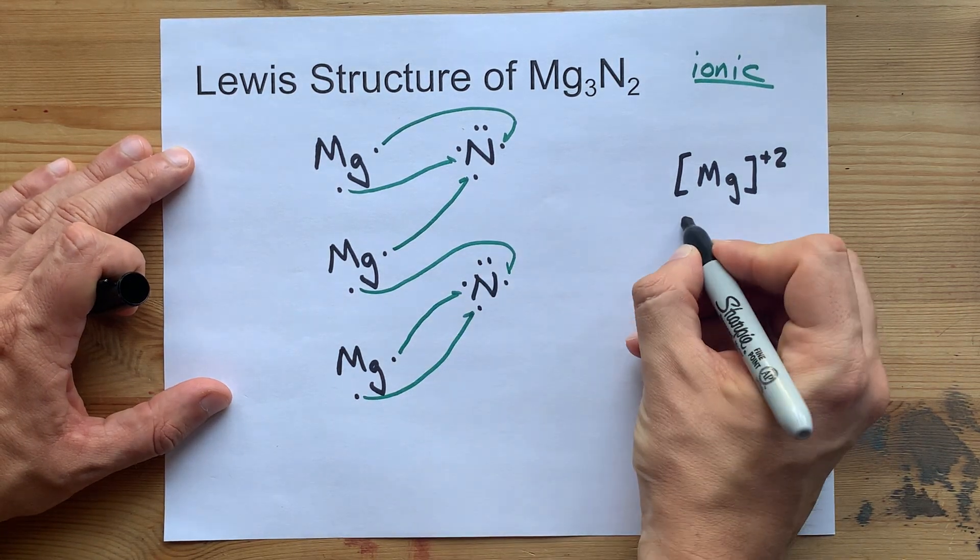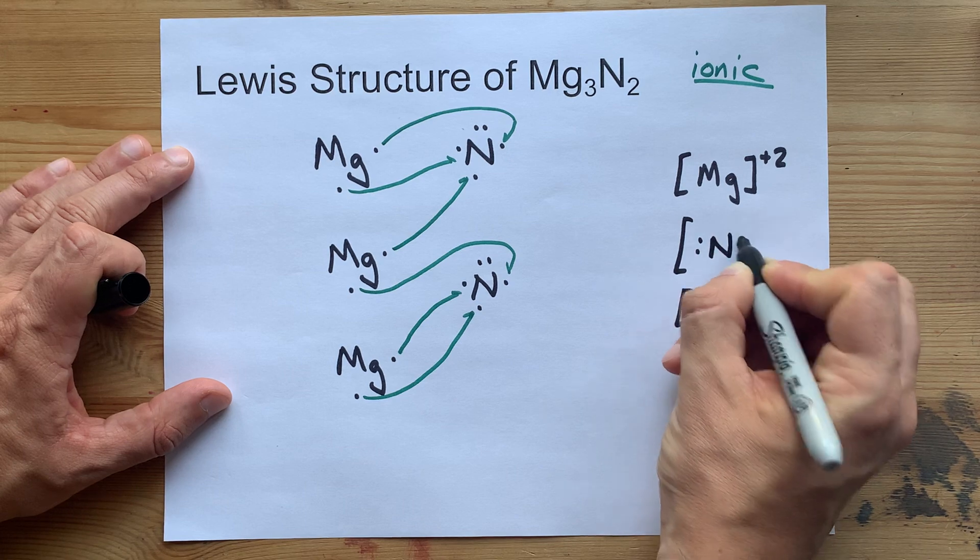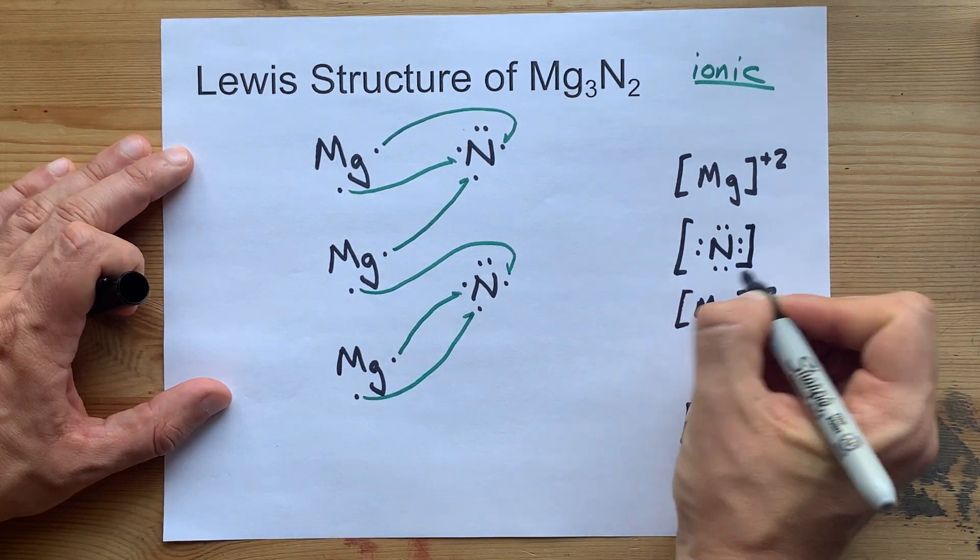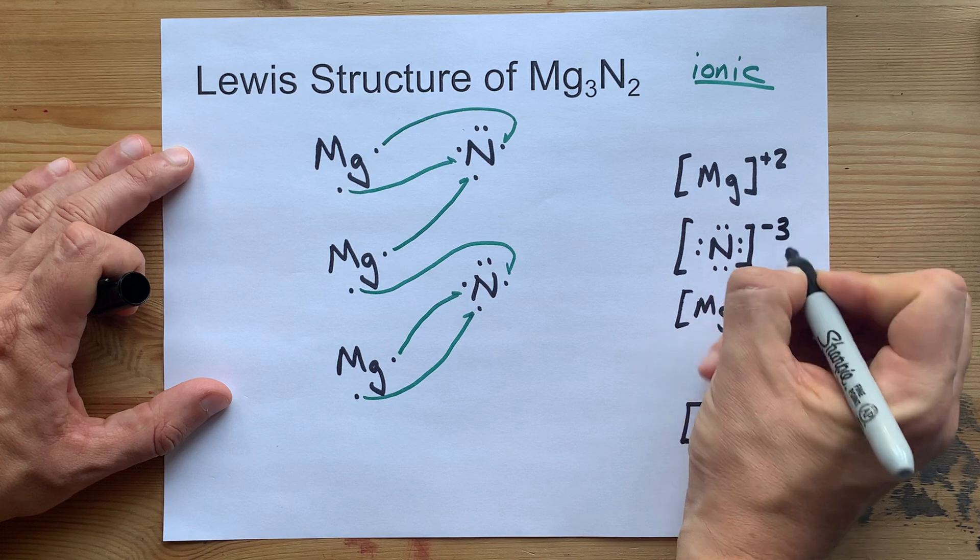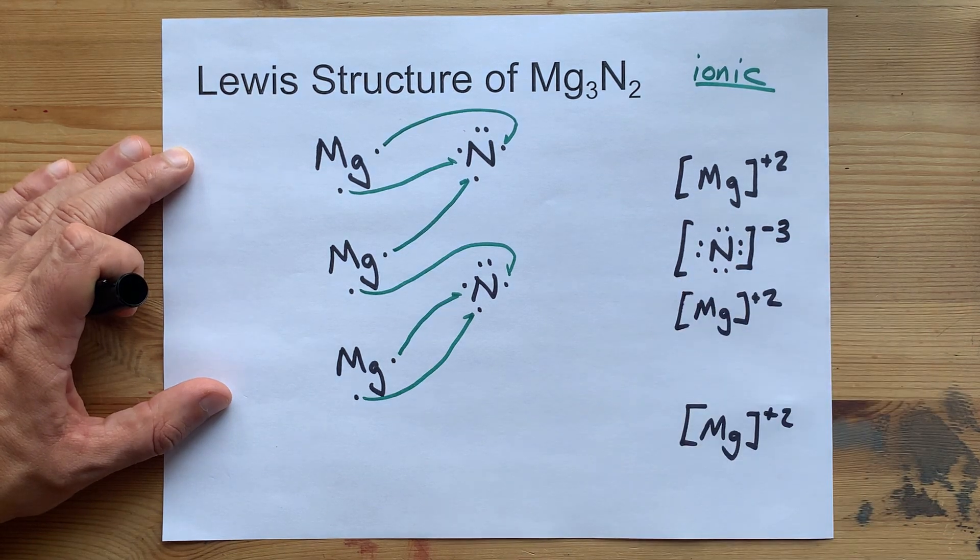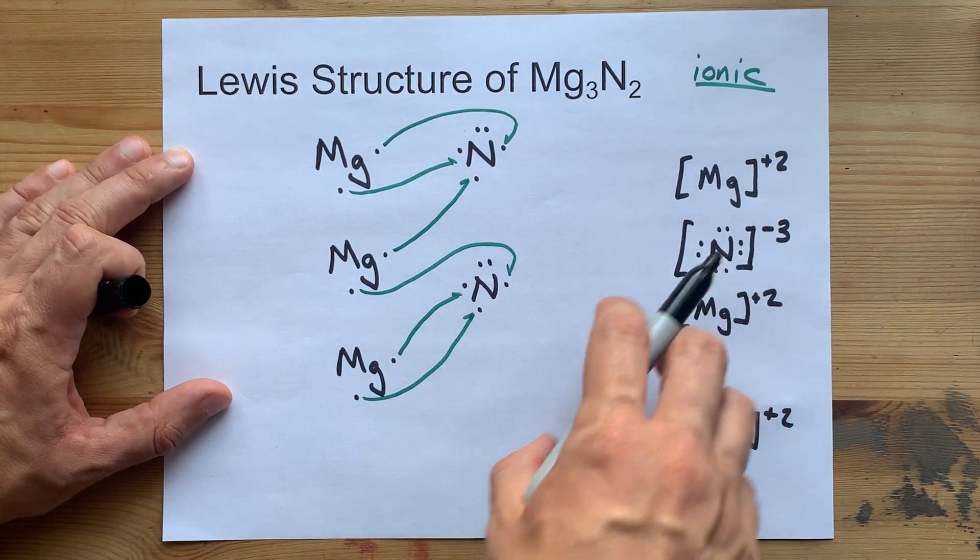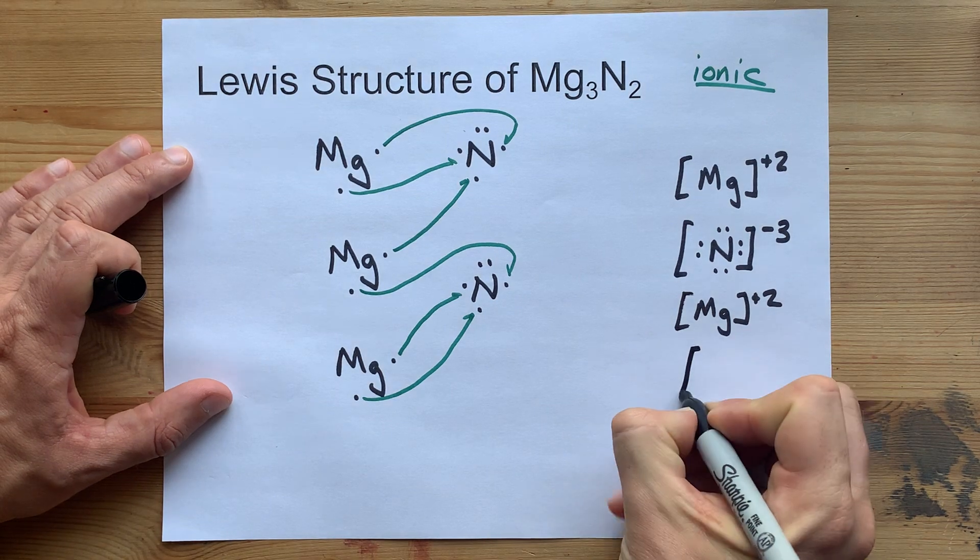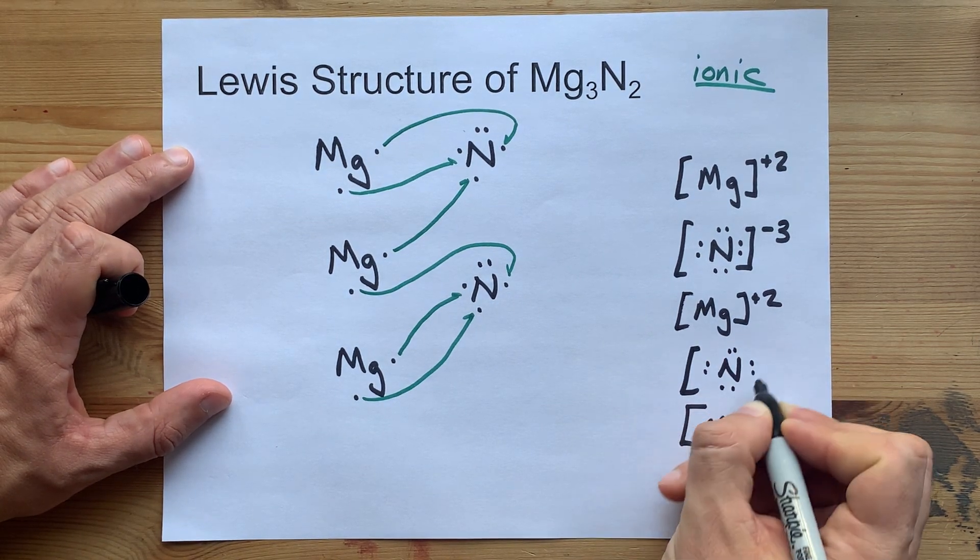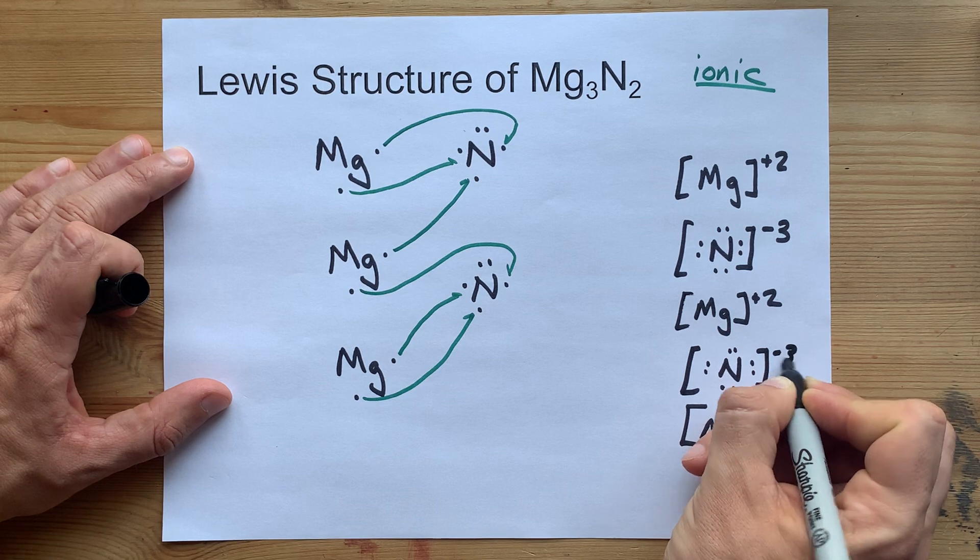Nitrogen, on the other hand, gained electrons. So draw them with their original 5 plus 3 each, that's 8 dots around it. And because they gained 3 electrons, you write the minus 3 in there. Same thing happened to this second N, but then that was it.